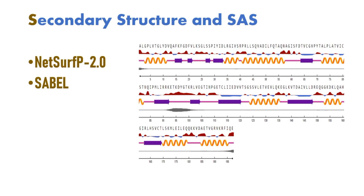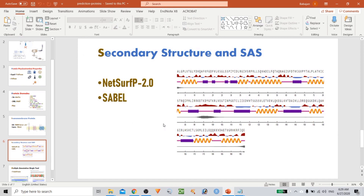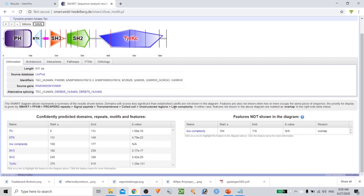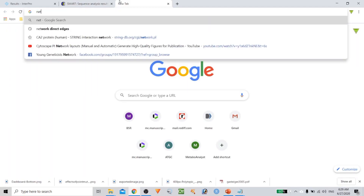The NetSurf-P server — this is version 2.0 — is available now. It not only predicts solvent accessibility surface area as before, but it has been updated and now also provides a beautiful graph. The graph will show you secondary structure elements and a few other things. Let us check how exactly they work — first we'll work with NetSurf-P.